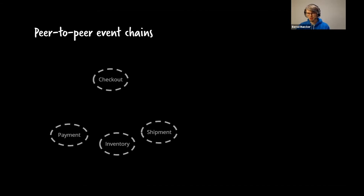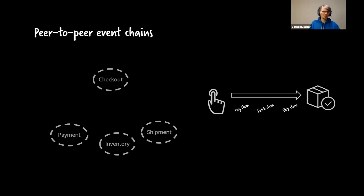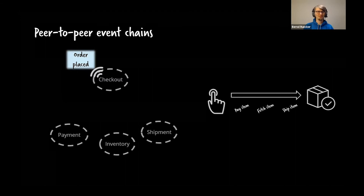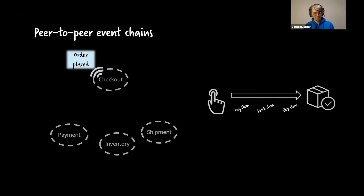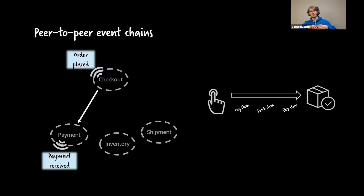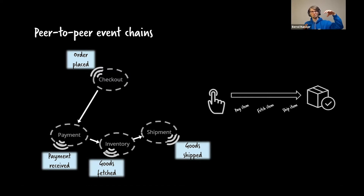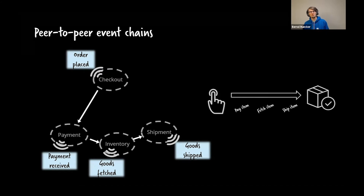Let's talk about event chains — one of my favorite topics. You have the checkout microservice which emits an 'order placed' event. The payment microservice subscribes to that: 'if there was an order placed, I have to collect money.' Then inventory listens to 'payment received' and fetches from stock. So you use event subscriptions to implement the business process of order fulfillment.